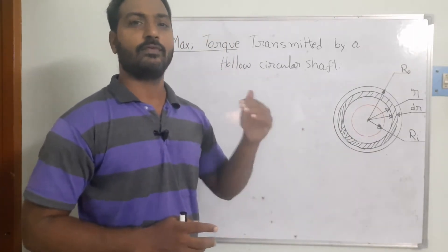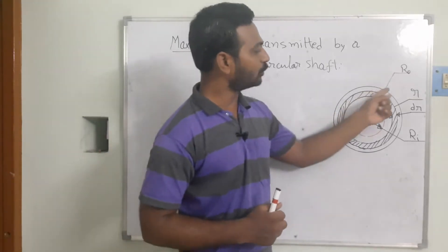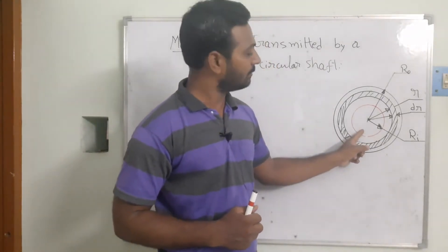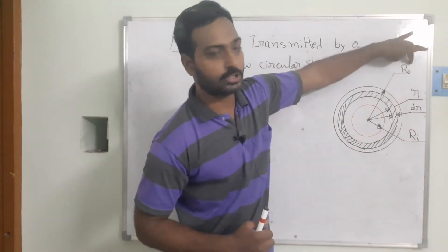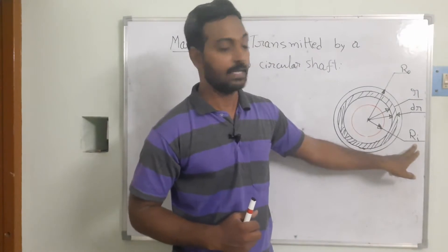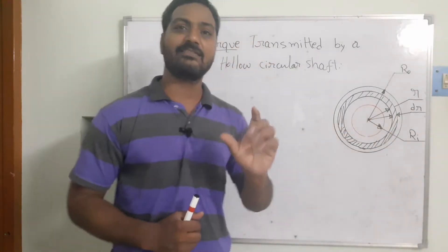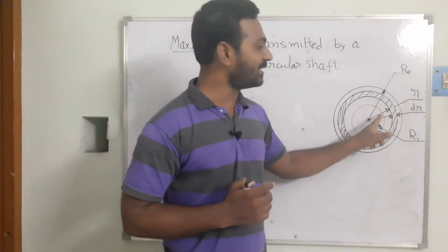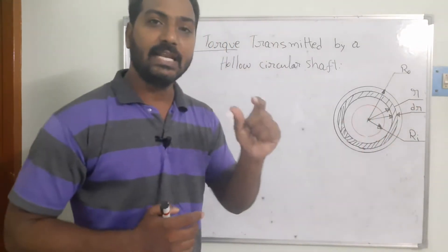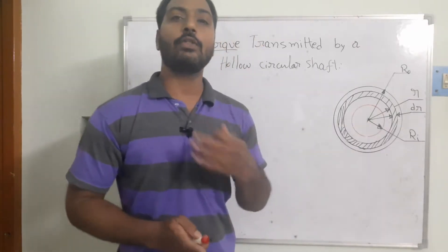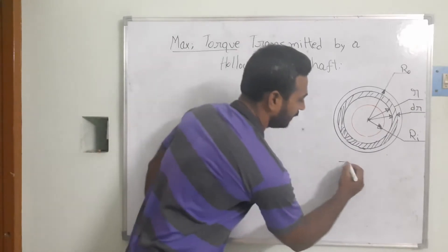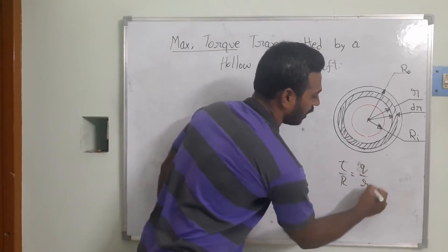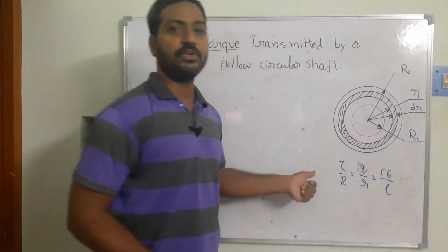I have shown the outer radius of the hollow circular shaft and the inner radius is shown in red. The outer radius is denoted R_naught and the inner radius is R_i. We consider one elemental ring existing between the inner and outer radii, located at a distance r from the center, with thickness dr. The governing equation we use is: τ/r = G·(dθ/L), and the shear stress q acts on this elemental strip.